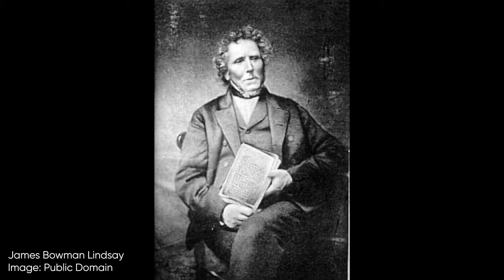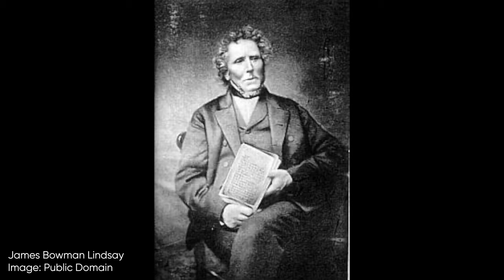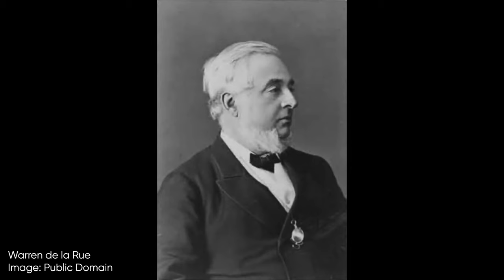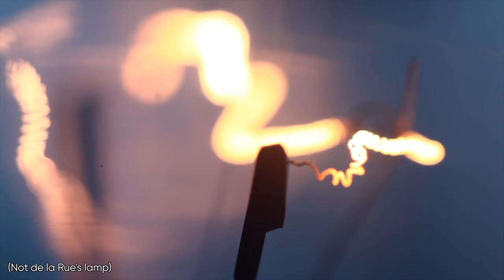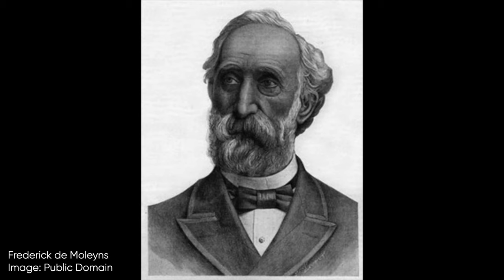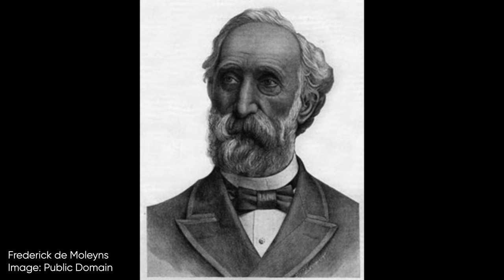In 1835, James Bowman Lindsay demonstrated a constant electric lamp at a public demonstration in Scotland. Few technical details are known today, but this is considered by some to be the first example of incandescent light. In 1840, British scientist Warren de la Rue developed a bulb using coiled platinum inside a vacuum tube, but it was very expensive and thus not commercially viable.